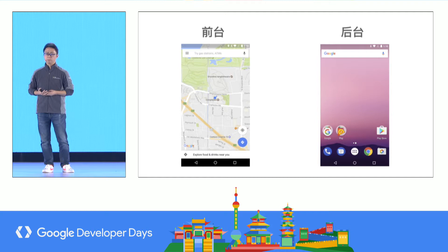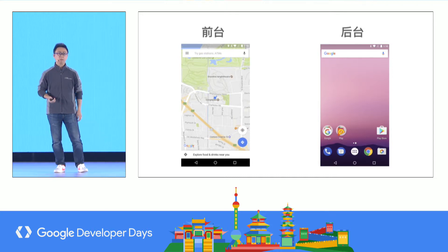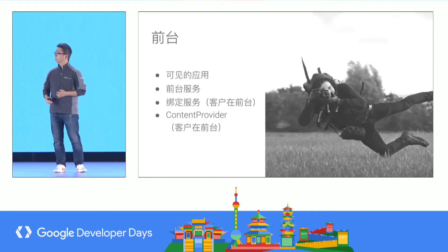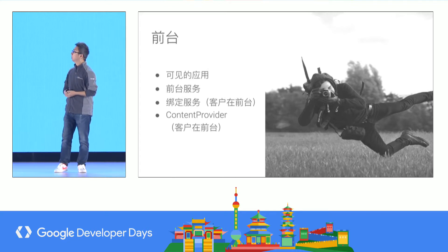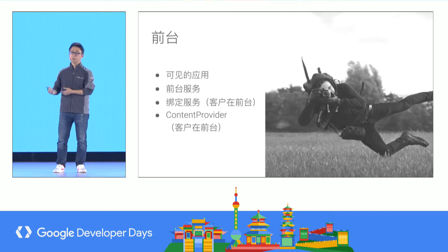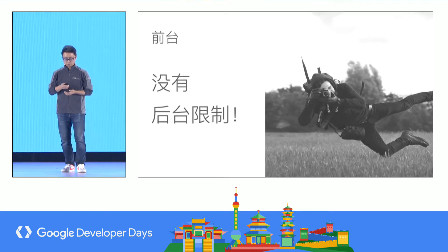How do we differentiate foreground and background? The simple rule: when your application has a visible UI, it is foreground. When you have an activity that is started or resumed, that is foreground; otherwise it is background. To be specific, other than visible activities, you are also considered foreground when your service has a lasting visible notification, when you have a bound service whose client application is in the foreground, or when you have a content provider whose client application is in the foreground.